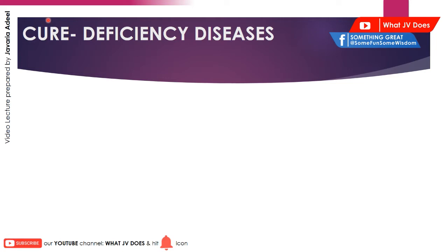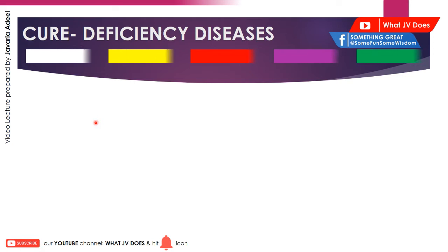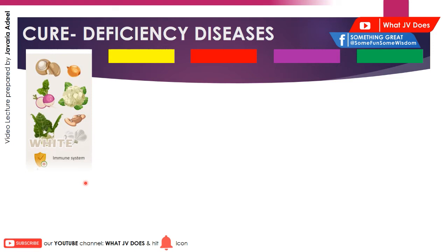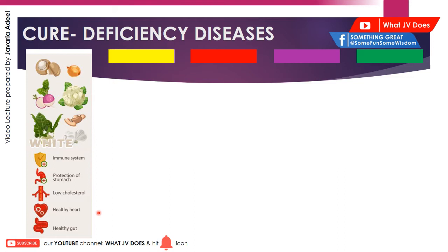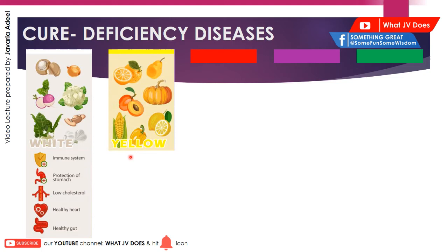Here I have categorized all the vegetables and fruits color-wise, showing how they are good for your health in various ways. If you consume the white category, they are good for the immune system, protection of the stomach, low cholesterol, healthy heart, and healthy gut.